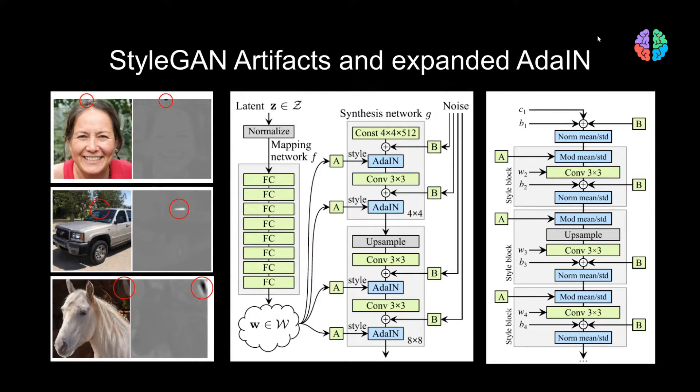Here we can see some of the images generated by StyleGAN and the intermediate feature maps corresponding to them. The problem with the adaptive instance normalization operation is that it normalizes each feature map separately instead of the entire patch. When the adaptive instance normalization step is removed, these droplet artifacts disappear completely.